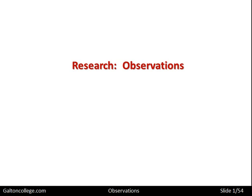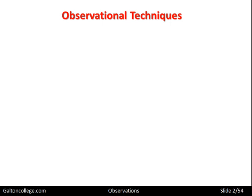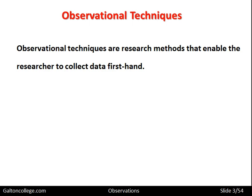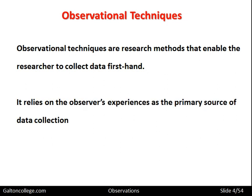We will now turn our attention to observations as a research technique. There are several observational techniques and this class will pick up on some of these. Observational techniques are research methods that enable the researcher to collect data first hand. The researcher makes observations first hand and records them, and this forms the basis of the research data. It relies on the observer's experience as the primary source of data collection.